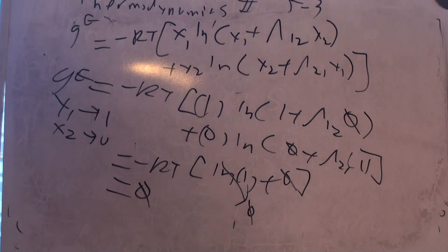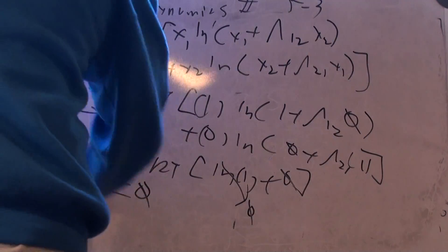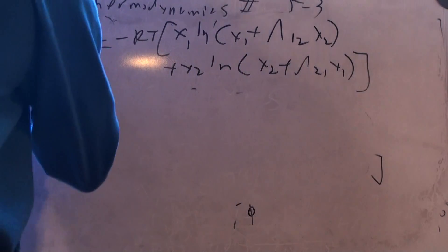But I have to do both. If I have two components, it has to be satisfied when either one of them is pure. Otherwise, my reference state is not consistent. So I have to redo this with the other component.